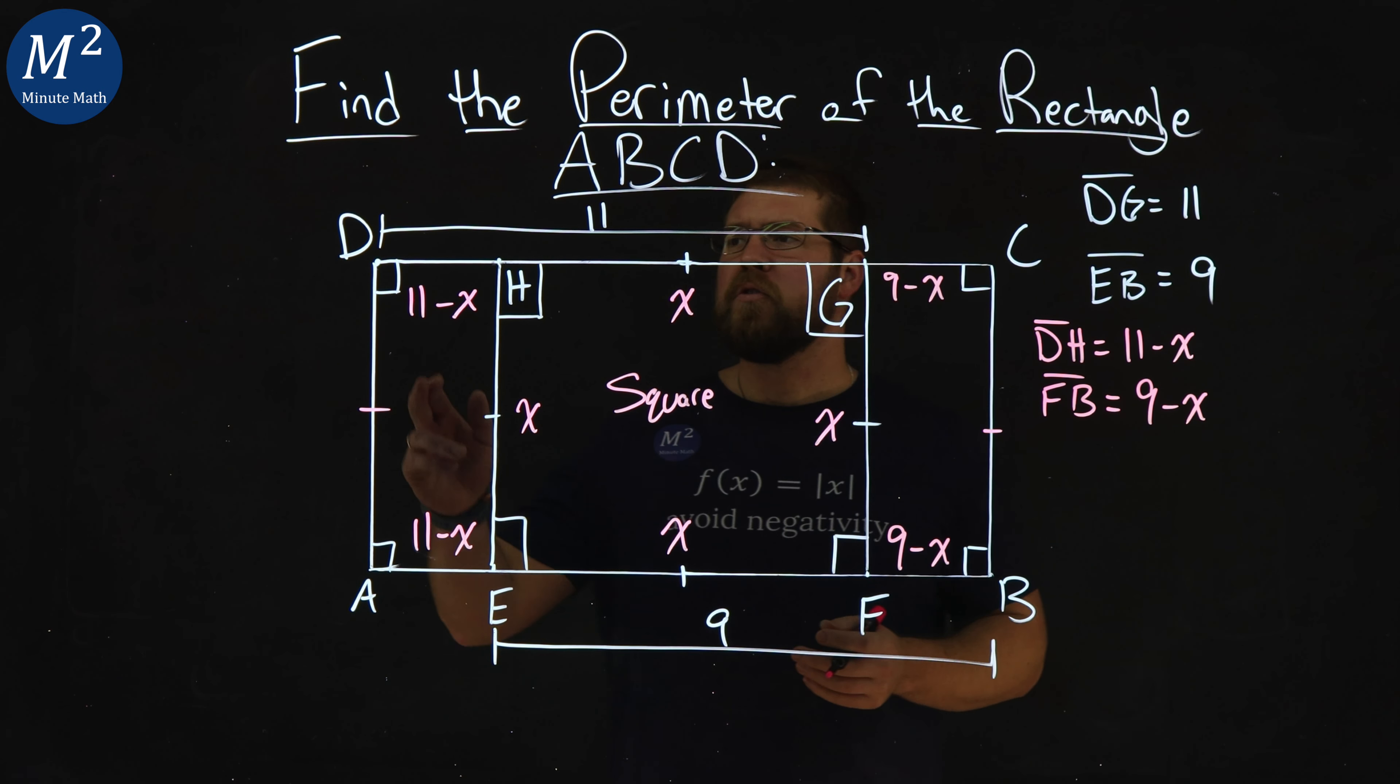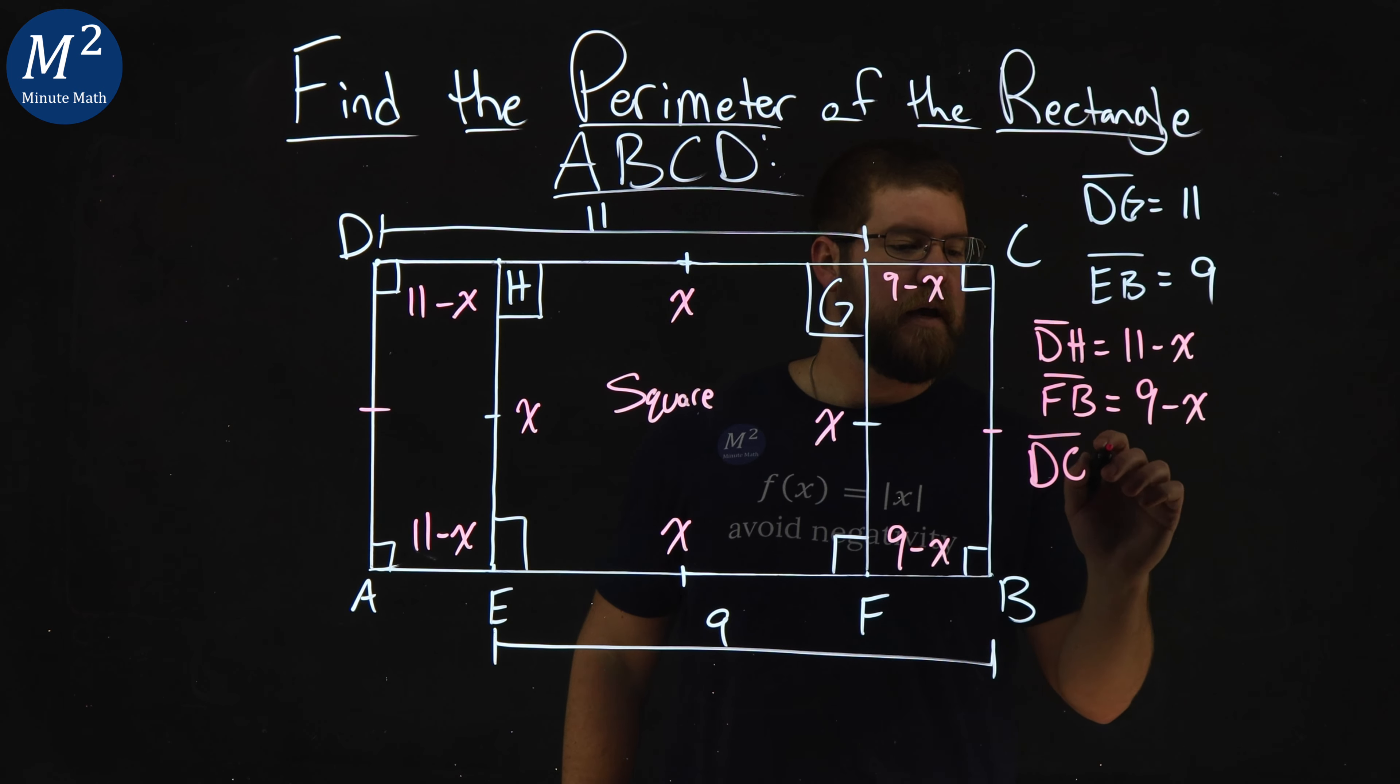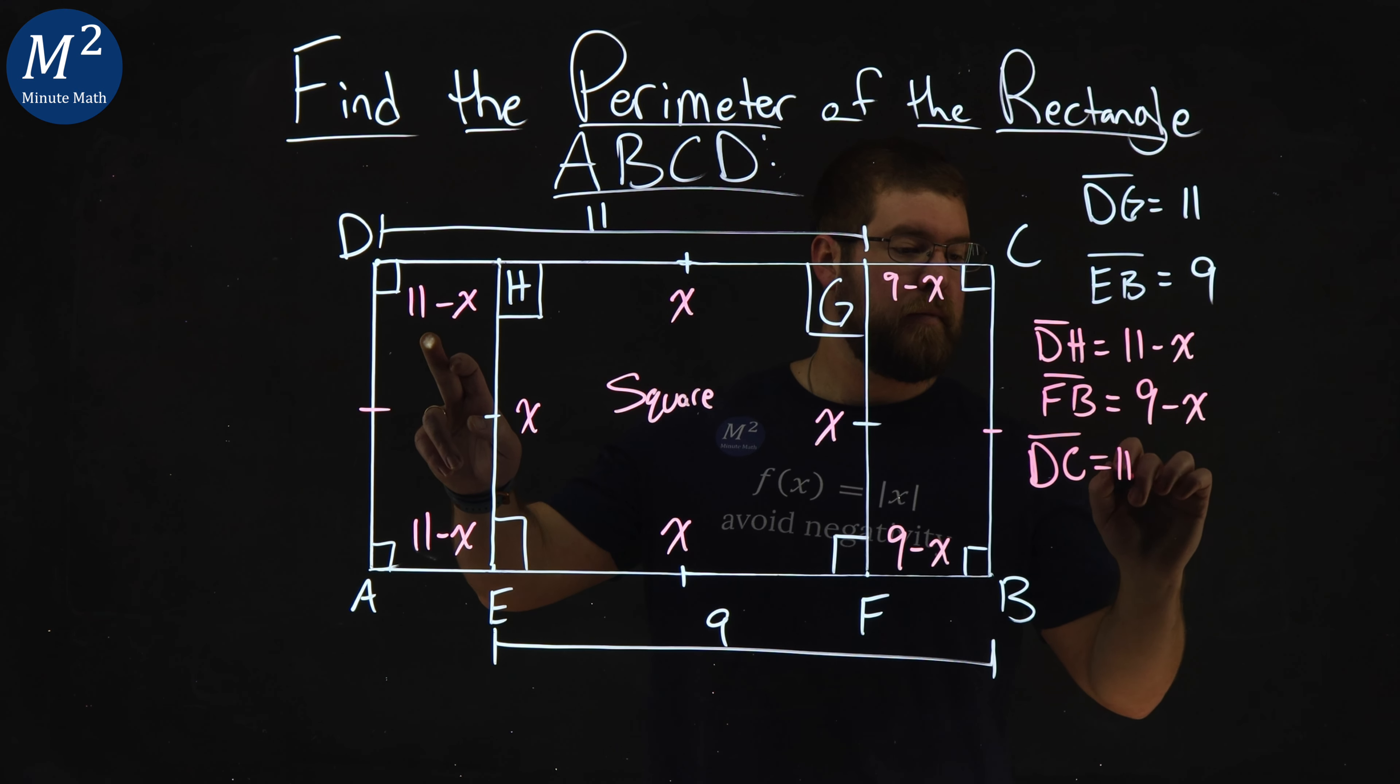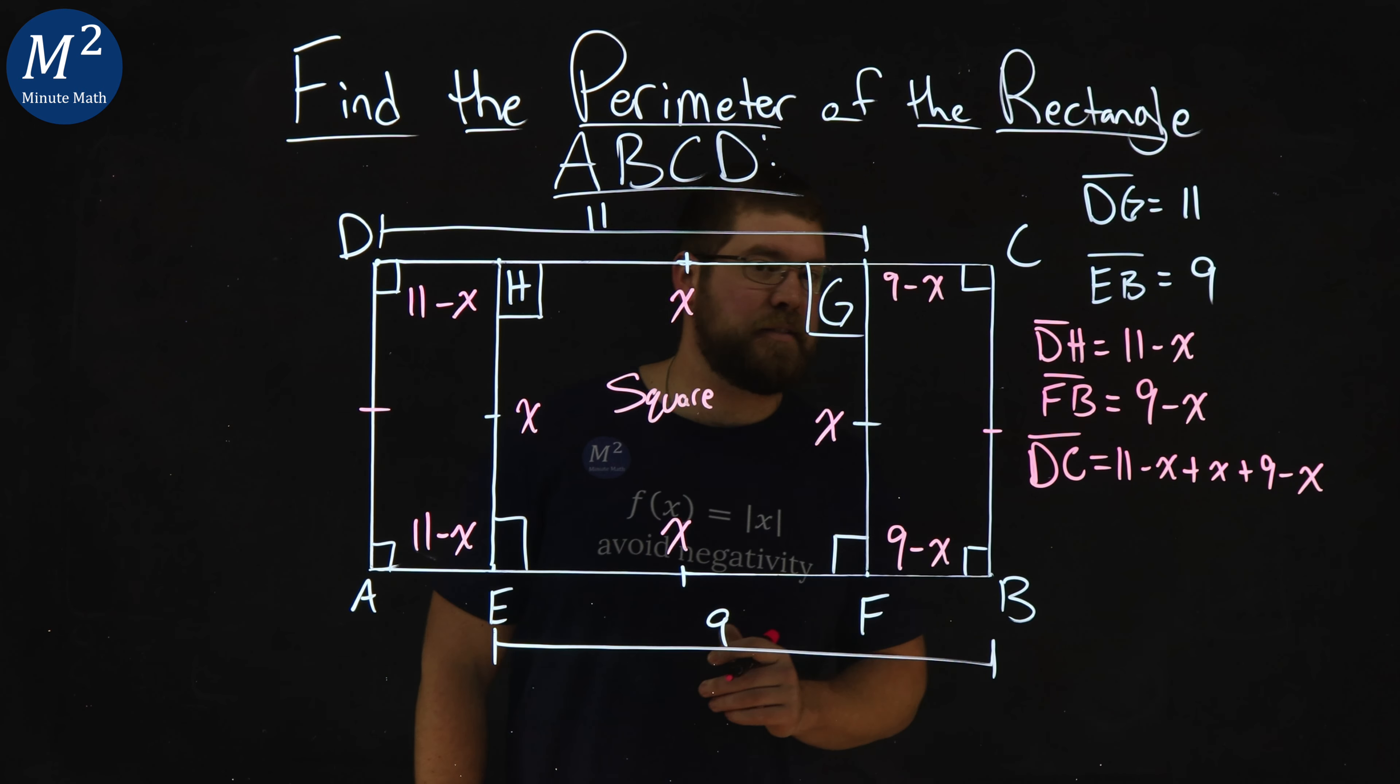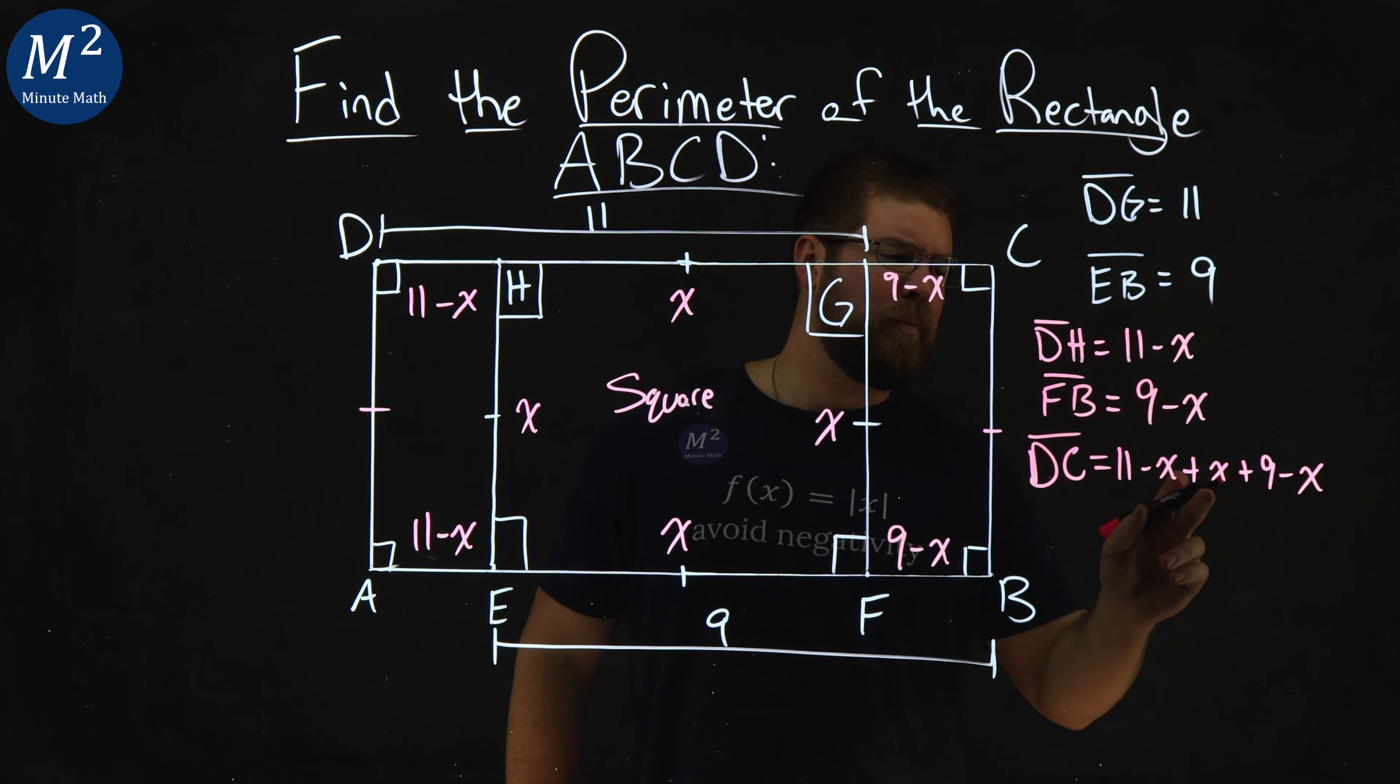Now, where do we go? Let's go find the overall length of DC. DC has a length of 11 minus X plus X, this distance here, plus 9 minus X. We've got a lot of X's and 9's and 11's, right? Well, just repeating of X's. Let's simplify this.